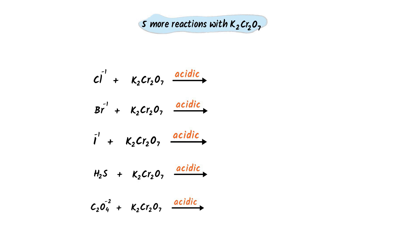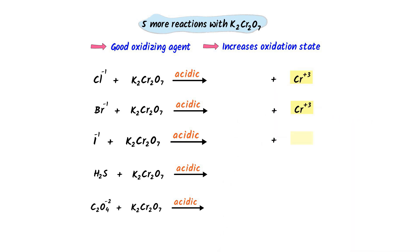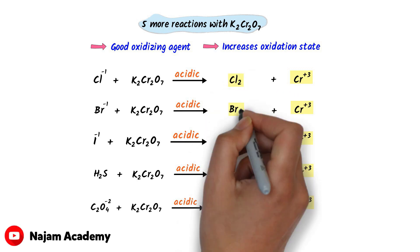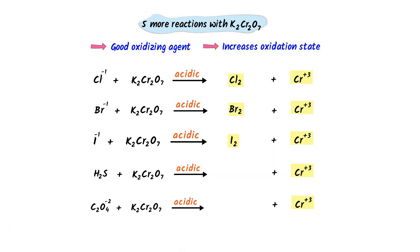Finally, we will learn five more important reactions with potassium dichromate. It is a good oxidizing agent and Cr³⁺ is formed in all these reactions. Chloride is oxidized to chlorine gas, bromide to bromine, iodide to I₂, hydrogen sulfide to sulfur, and oxalate ion to carbon dioxide gas. If you want to learn more about inorganic reactions, watch our other lecture — the link is given in the description.